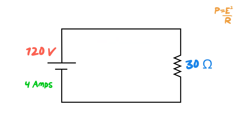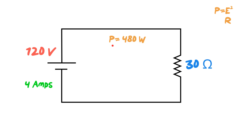Now let's use the formula P equals E squared over R — one of the other ones we had. This is useful when we only have the voltage and the resistance. Power equals 120 squared over 30 ohms. We punch that into the calculator and, lo and behold, we get 480 watts.